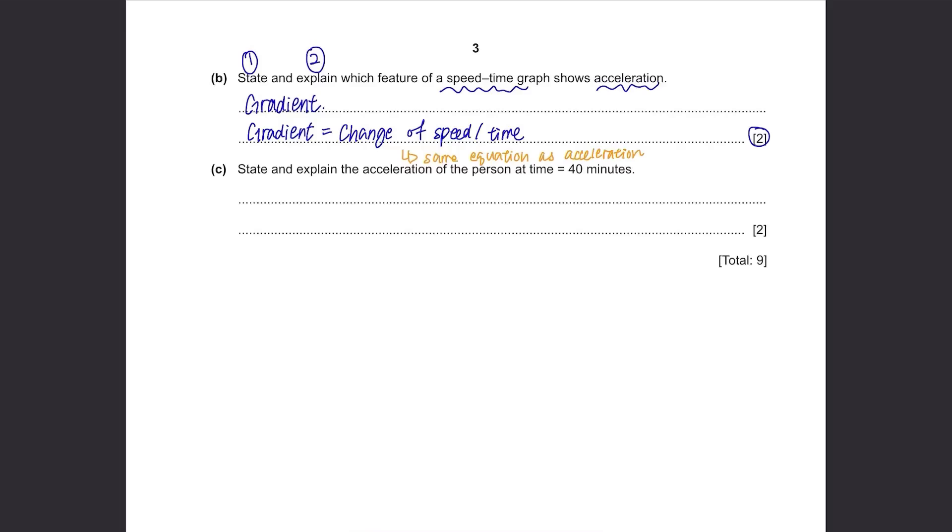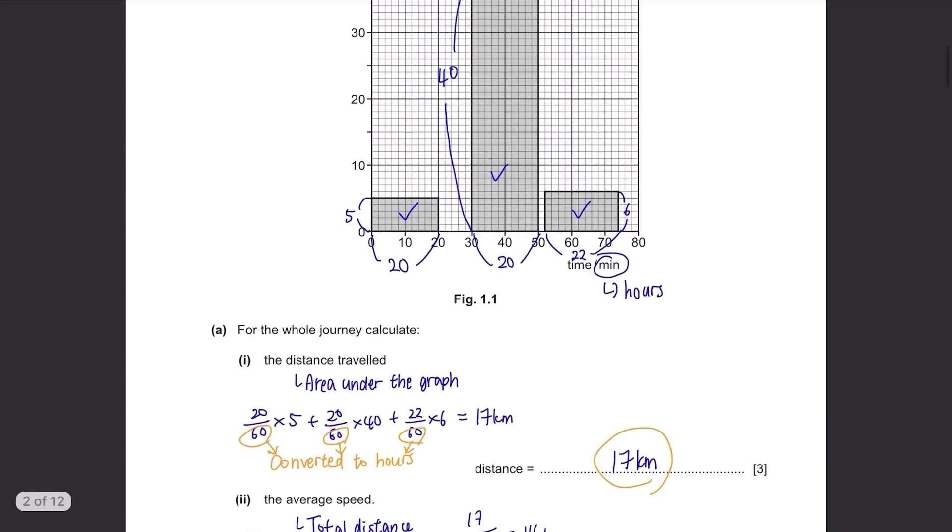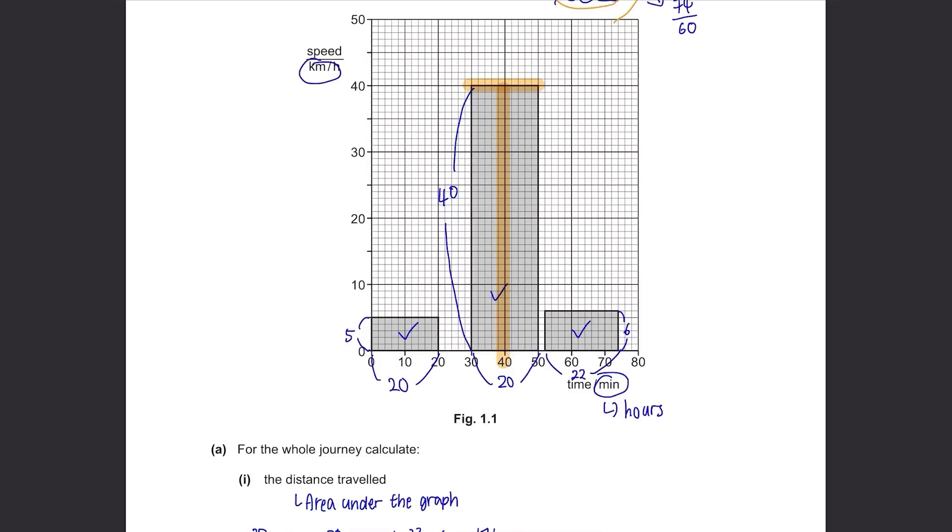Part C. State and explain the acceleration of the person at time equals to 40 minutes. When time is at 40 minutes, the graph is a straight horizontal line. If it's a straight horizontal line, it means that the gradient is zero. This means that acceleration is zero and the reason is because the gradient is zero.